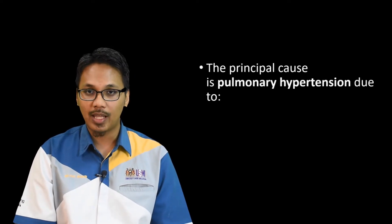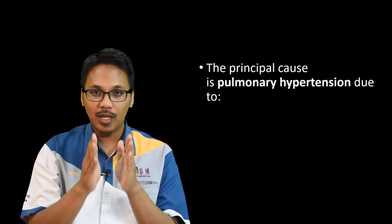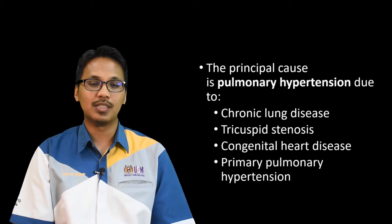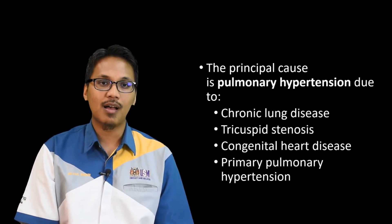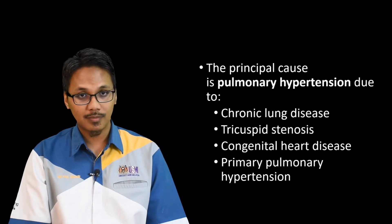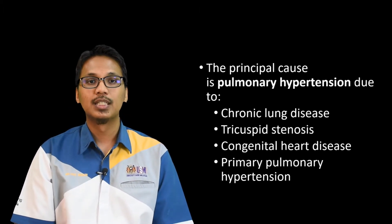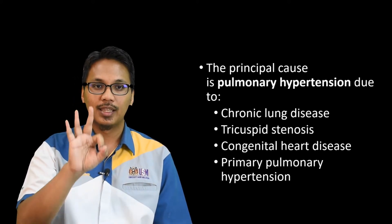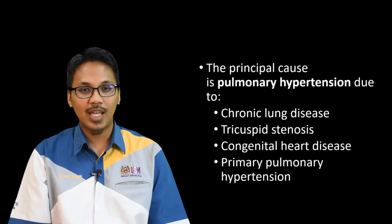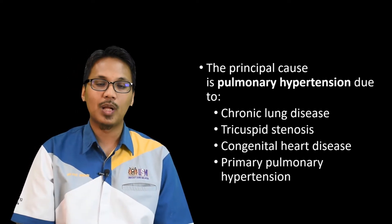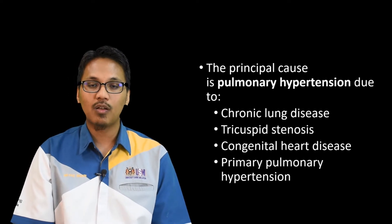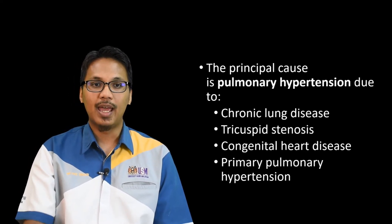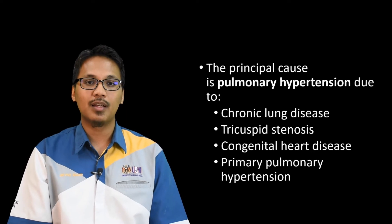What are the causes of right atrial enlargement? The principal cause is P-Pulmonale, and this can be due to many causes. Among them: first is chronic lung disease, especially those with pulmonary involvement. Second is tricuspid stenosis. Third is congenital heart disease, including pulmonary stenosis and tetralogy of Fallot. And lastly, primary pulmonary hypertension.